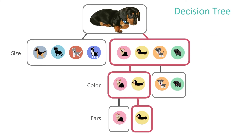Random forest works by creating decision trees. Decision trees split your data for each variable according to how useful those variables are in determining the outcome — in this case, dog breed. For example, a decision tree might first split by size — small dog — then by color — dark — then by ears, to finally determine the sample is a dachshund. That's the only pattern down that branch.